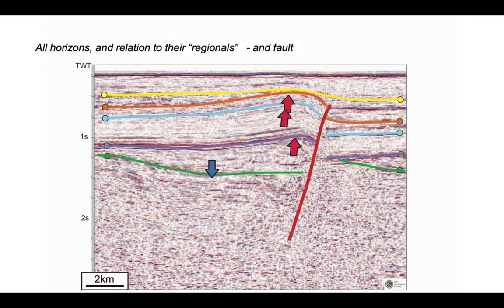Let's now just pop a fault on and add the sense of displacement. The hanging wall side of the fault has gone both up and down. And we can infer that it first went down and then more recently has come back up again.